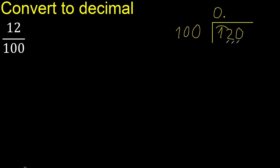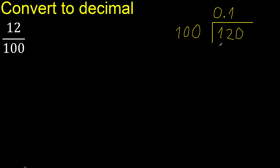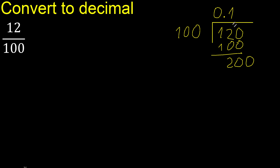Here 0.120 is not less, therefore 100 multiplied by which number is nearest to 120 but not greater — 2 is 200, therefore multiplied by 1 is 100. Subtract: remainder is 20. There is no number that goes down, therefore complete — always complete with 0.